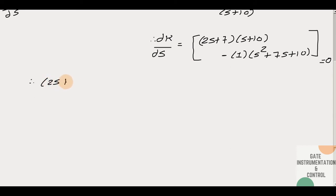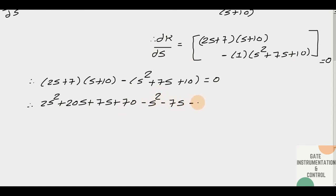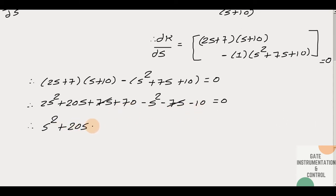So therefore: (2s+7) multiplied by (s+10) minus (s²+7s+10) equals zero. Expanding: 2s²+20s+7s+70 minus s² minus 7s minus 10 equals zero. The 7s terms cancel, giving s² + 20s + 60 = 0.